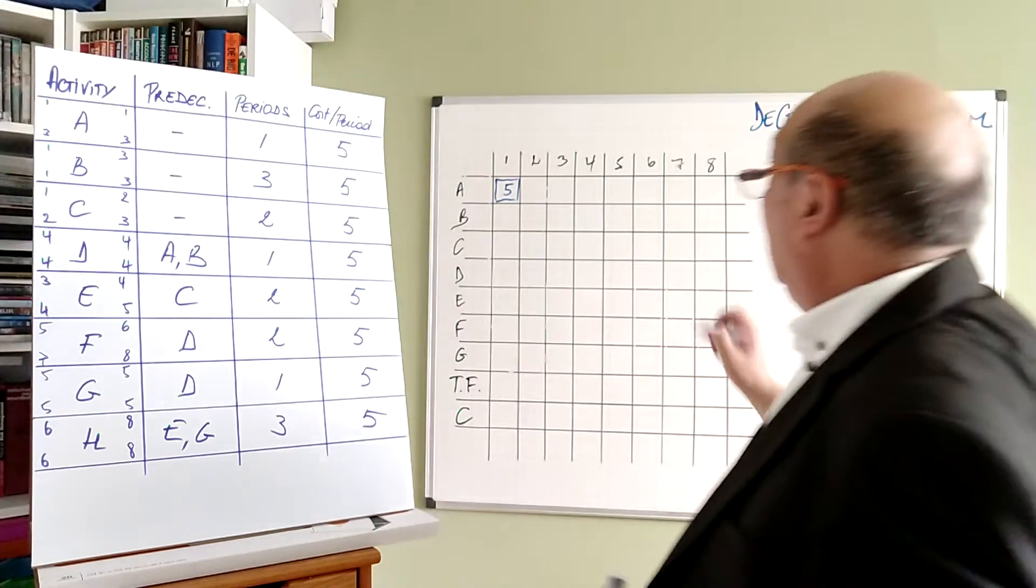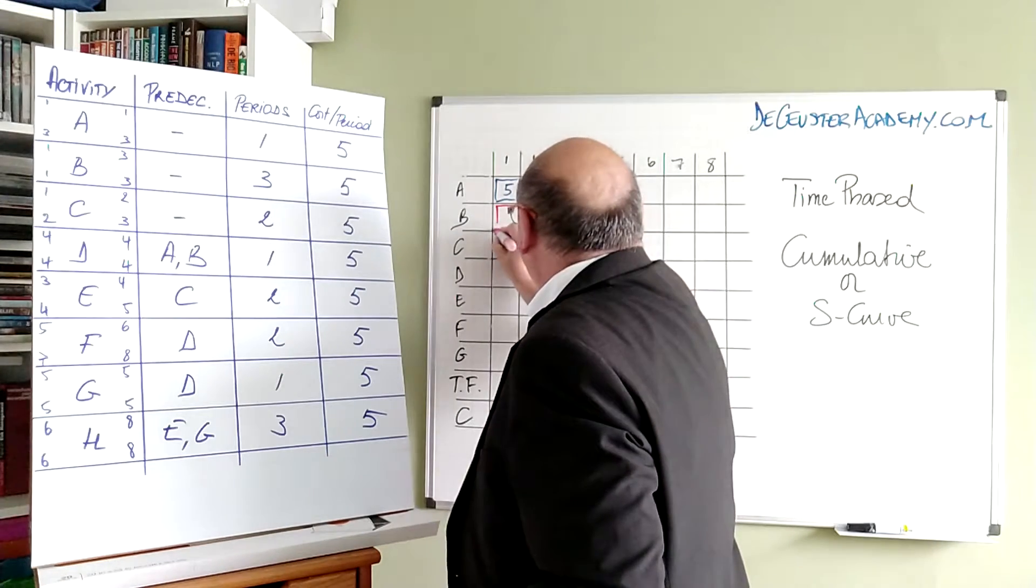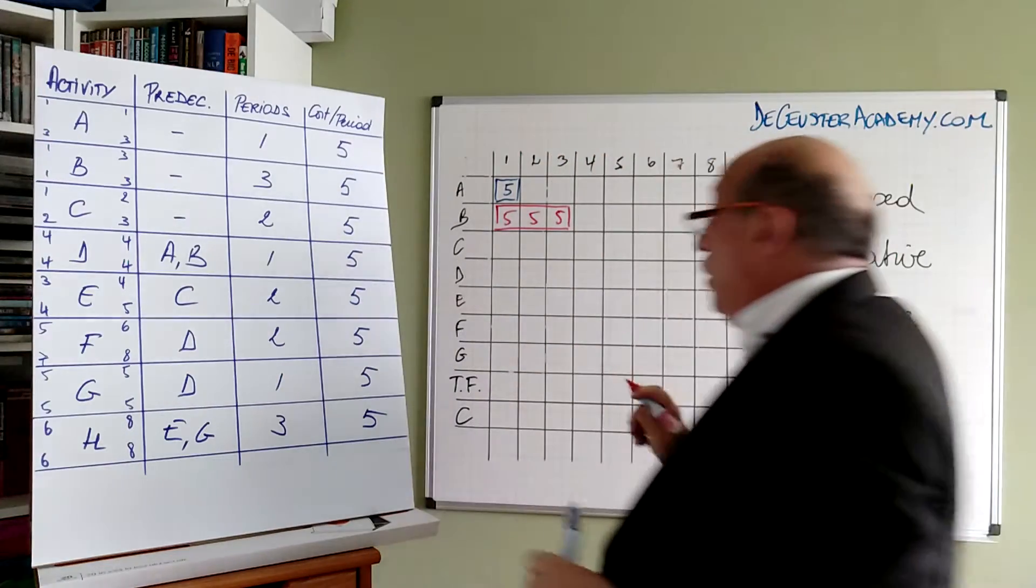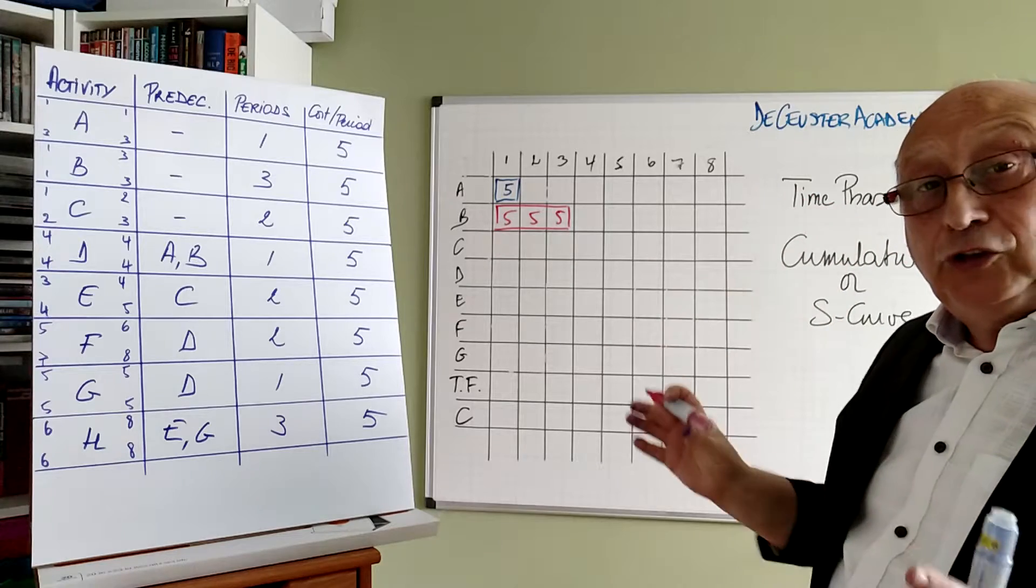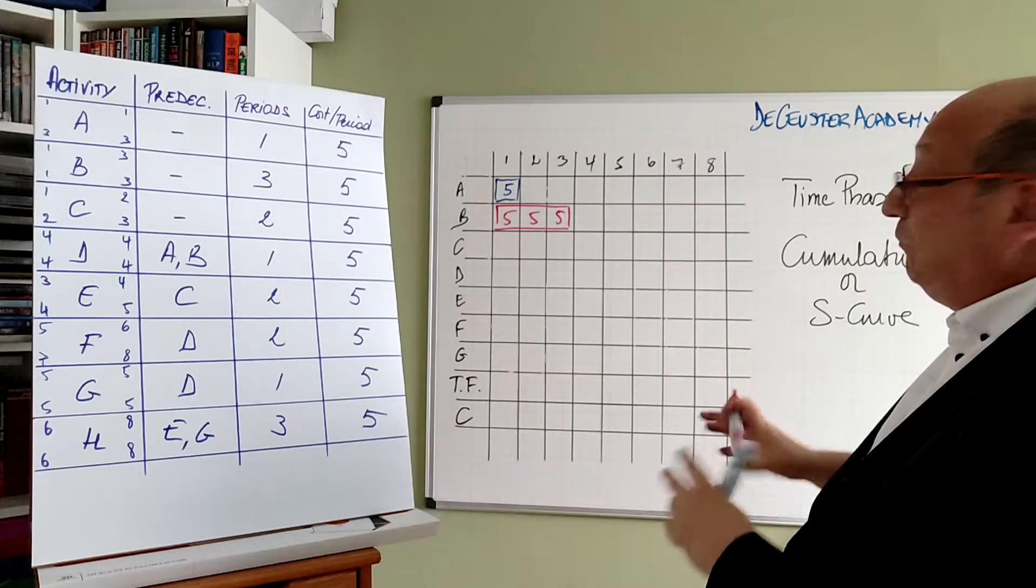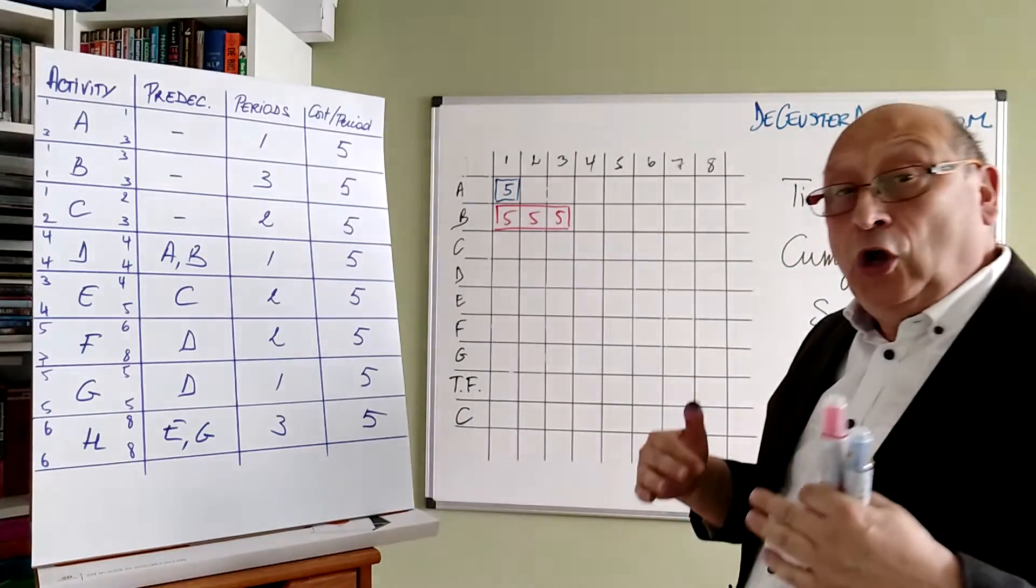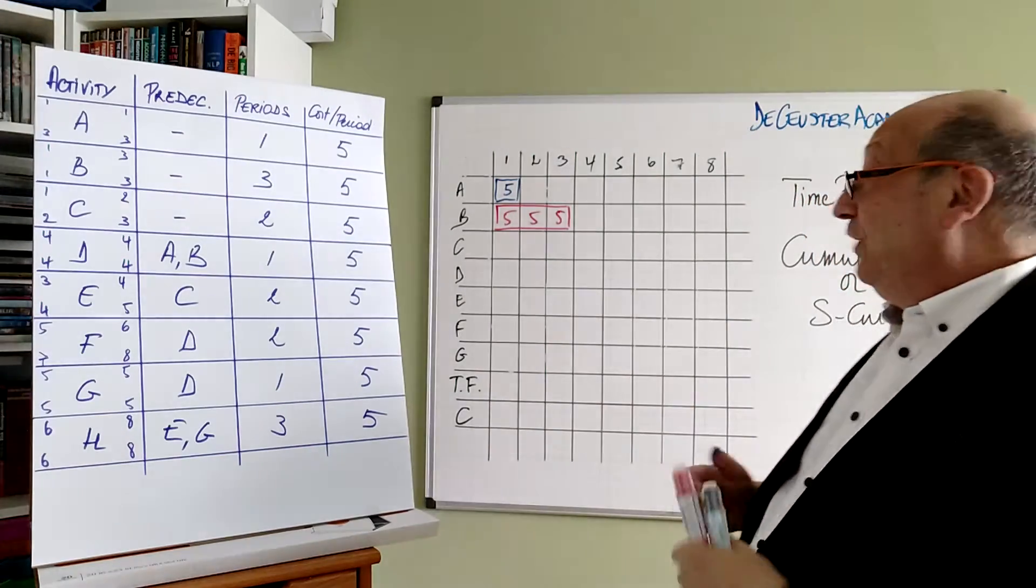So we have three periods which gives us 5, 5, and 5. Basically what we did is set the cost per period to a fixed value of 5, which makes it a little bit easier to do the calculations. Nevertheless, in reality those costs can be completely different.